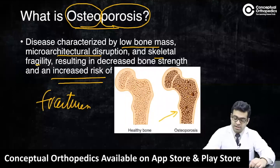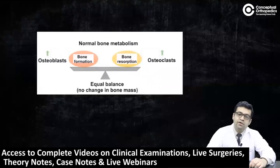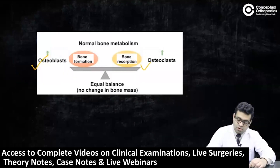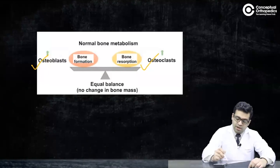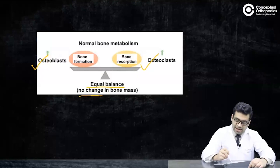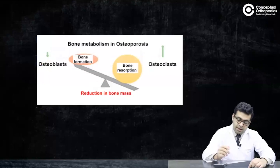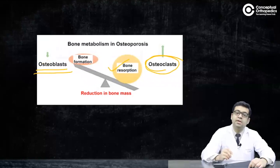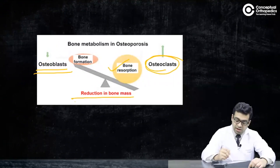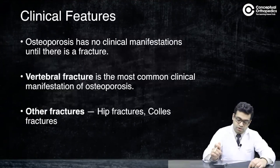If we talk about normal bone metabolism, there is a very fine balance between osteoblasts and osteoclasts. Osteoblasts are cells important for bone formation, and osteoclasts are responsible for bone resorption. There is equal balance and no change in bone mass. But if there is increased activity of osteoclasts resulting in increased bone resorption, or decreased activity of osteoblasts meaning decreased bone formation, this results in decreased bone mass and leads to osteoporosis.